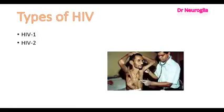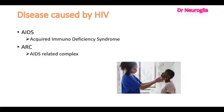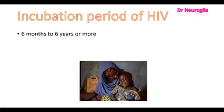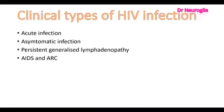There are two types of HIV: HIV-1 and HIV-2. The diseases caused by HIV are AIDS (acquired immunodeficiency syndrome) and ARC (AIDS-related complex). The incubation period of HIV is 6 months to 6 years or more.